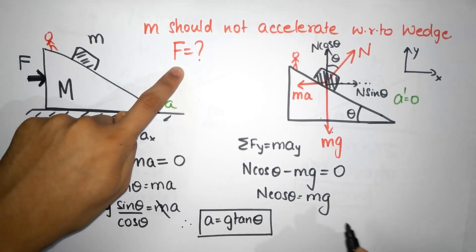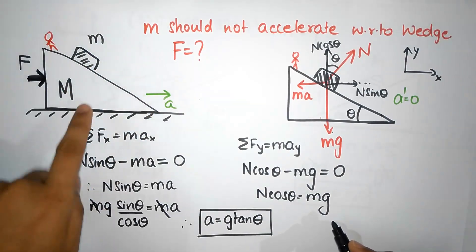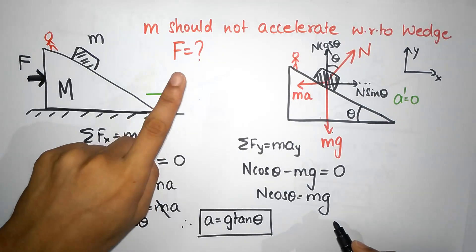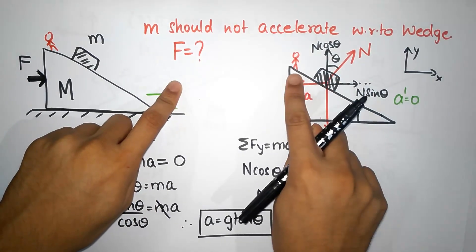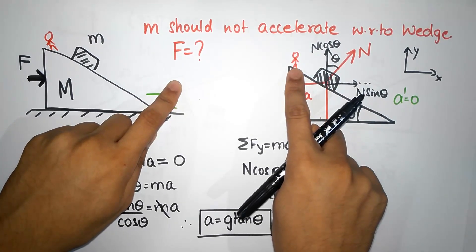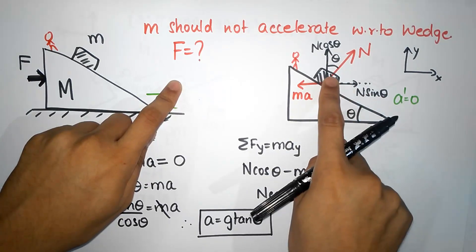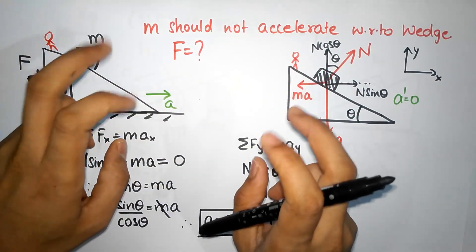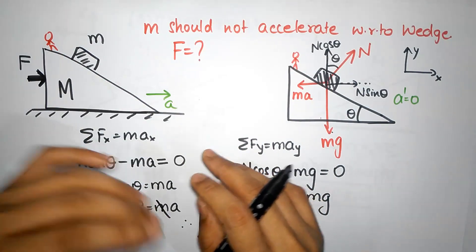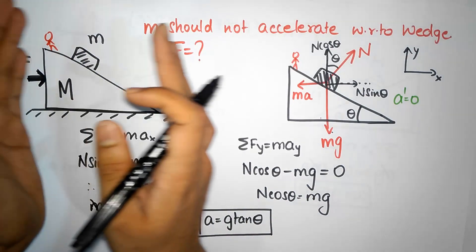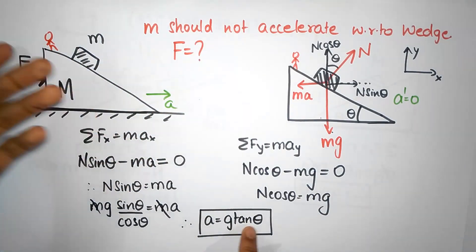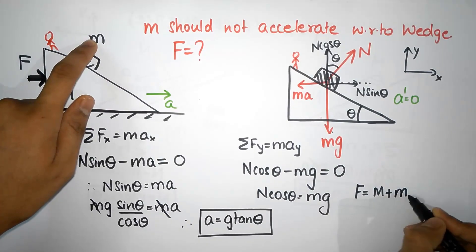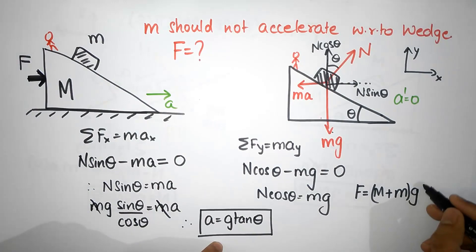But the question asked what should be the force. The whole system has mass M plus m, and you're accelerating the entire object with acceleration a. Don't get confused - this block should not accelerate with respect to the wedge, but from the inertial reference frame both are accelerating right with acceleration a. So the required force F equals mass times acceleration, which is M plus m times g tan theta.